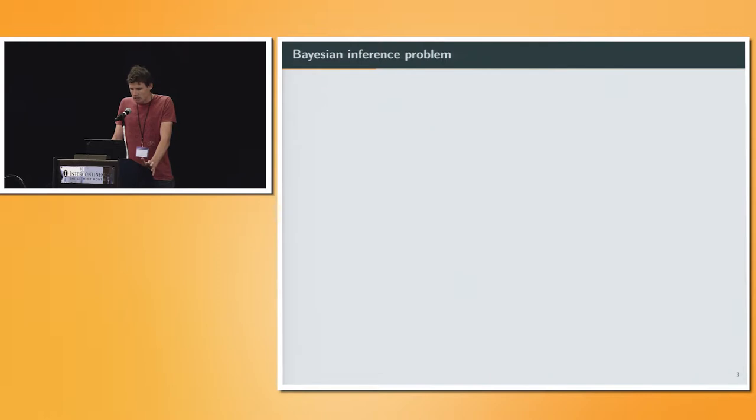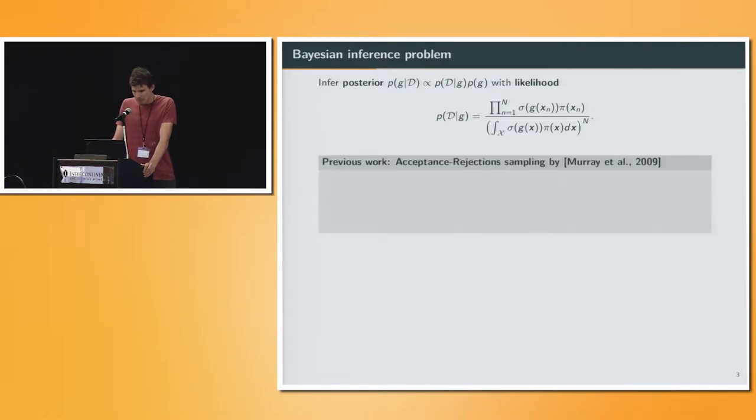As you all know, the Bayesian inference problem is getting the posterior of your latent variables, here our function g, given our observations. This is proportional to the likelihood times the prior, and the likelihood in this case is just the product of the density at our observation points. In the previous work I mentioned, they provided an acceptance rejection sampling scheme that made the inference tractable. However, the rejections slow down the inference, and it does not scale to large data sets.